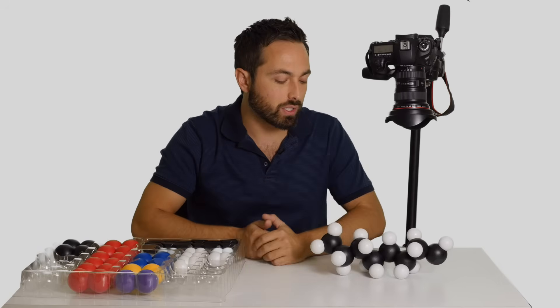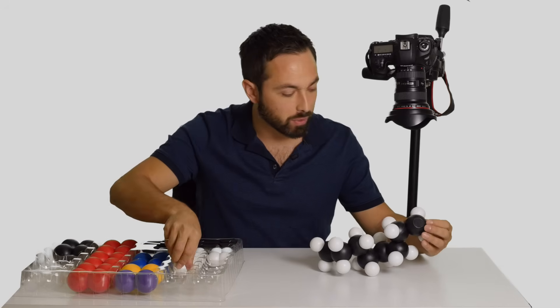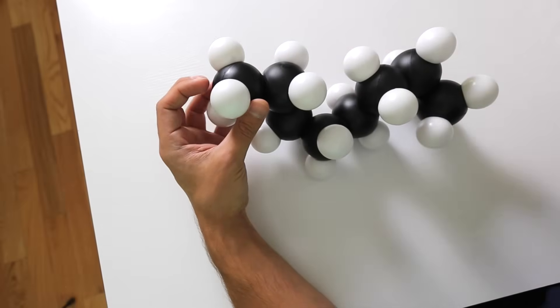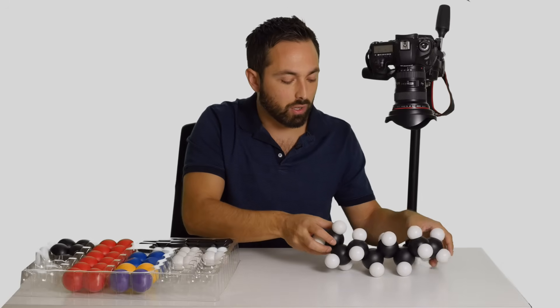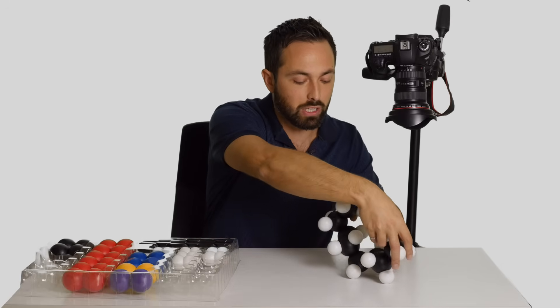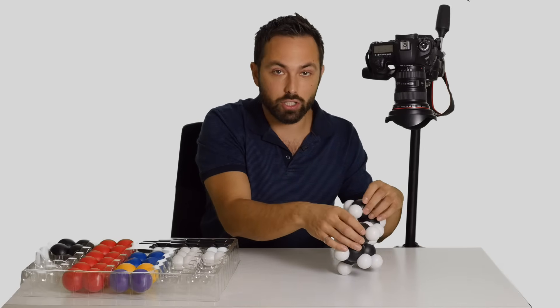What's interesting to notice about these alkanes is that because they're all single bonds, there's a lot of rotation which is possible. So these molecules are really quite flexible and they'd be jiggling around and moving all around in these different configurations.